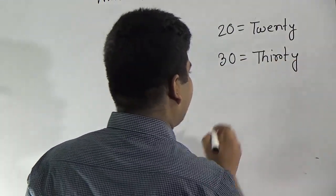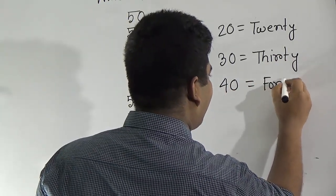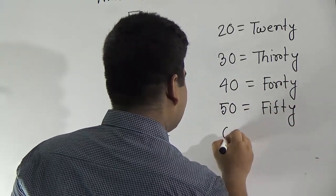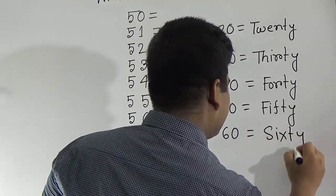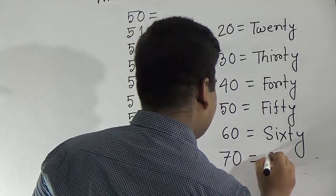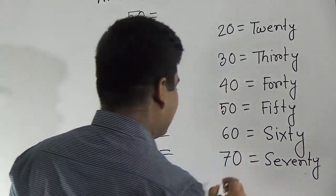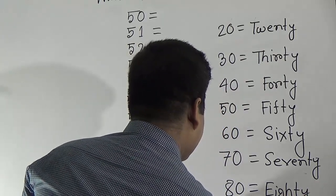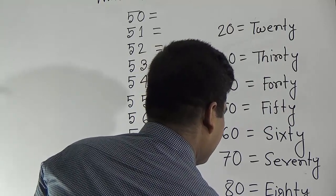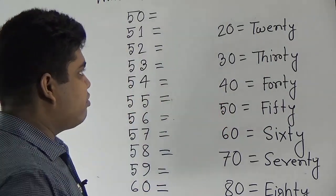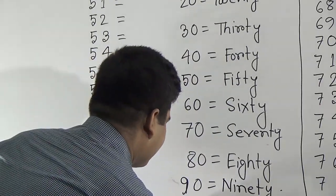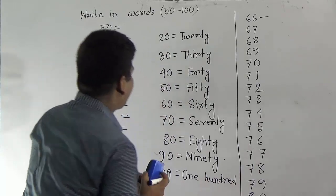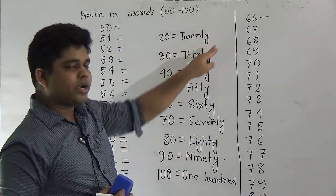Now we shall learn the spelling of 20, 30, 40, 50, 60, 70, 80, 90, and 100. The spelling of 30 is T-H-I-R-T-Y. The spelling of 60 is S-I-X-T-Y. The spelling of 70 is S-E-V-E-N-T-Y. The spelling of 80 is E-I-G-H-T-Y. The spelling of 90 is N-I-N-E-T-Y. My dear students, now we shall learn the spelling of 100. By using this spelling and the spelling of 1 to 9, we shall write numbers in words from 1 to 100.